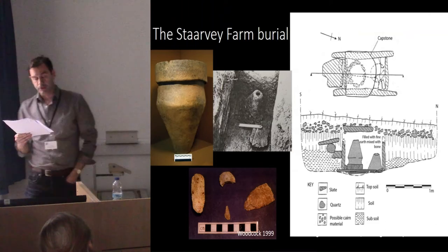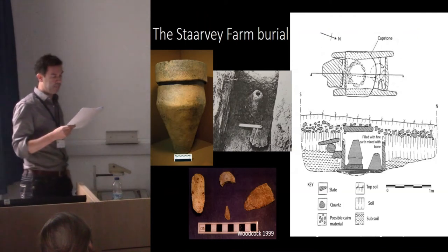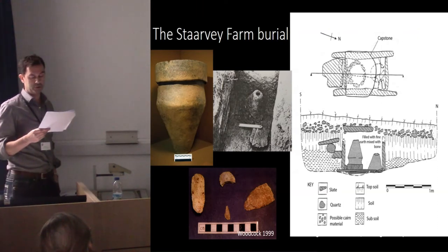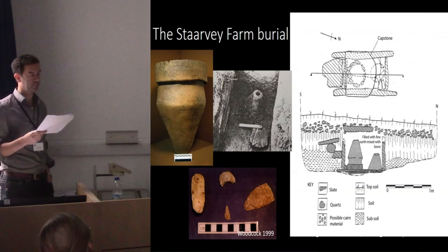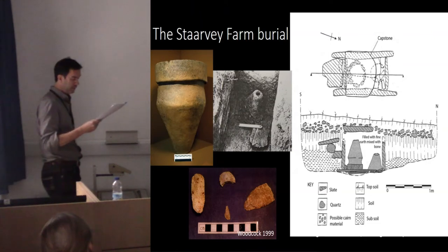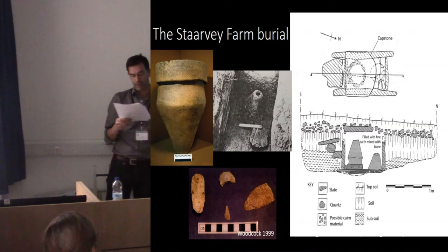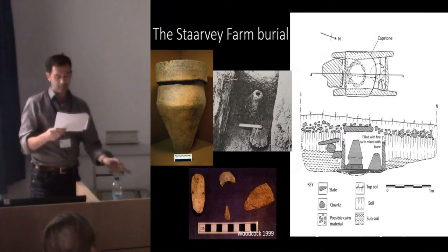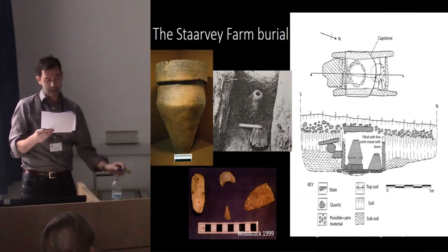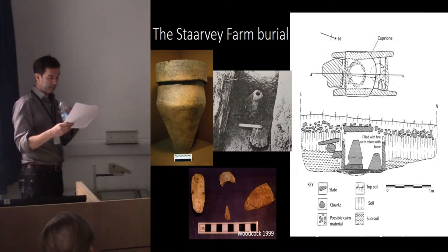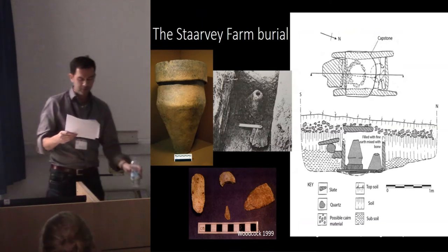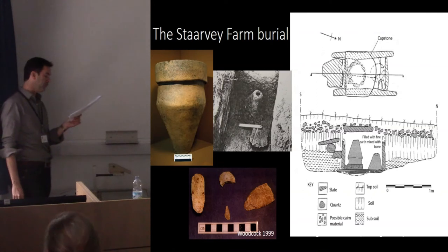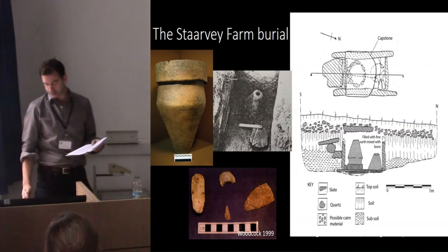A kist at Starby Farm was uncovered during ploughing on the Isle of Man in 1947 and excavated rapidly by Basil Magor. The details of the excavation were not published until 1999 when Jenny Woodcock drew together Magor's notes and examined the objects he identified. That report details two inverted urns, a plano-convex flint knife, a flint scraper, and a mass of cremated bone from within the urns and the kist. One of the urns was certainly a collared urn, inverted, and the mouth was hemmed with nine pebbles, all but one of which were quartz. The bones had never been assessed until Michelle examined them. She identified the remains of at least four people: two adults, an adolescent, and a child, possibly very young.